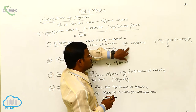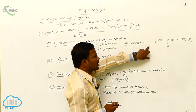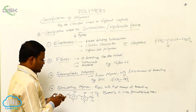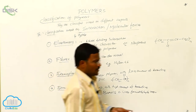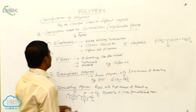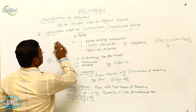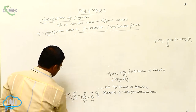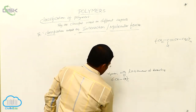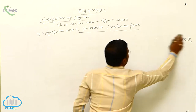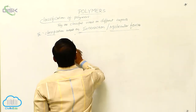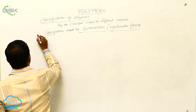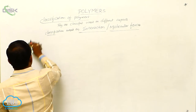Elastomers have weak binding interactions between the polymer chains and exhibit elastic character. Examples include vulcanized rubbers, neoprene, buna-S, and buna-N. This completes the classification based on interaction. The next and last category is classification based on growth polymerization, which is the fifth type of classification.